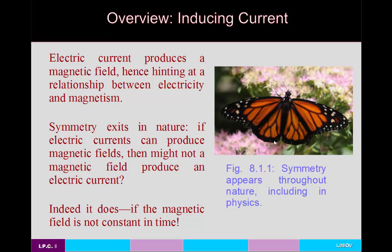This is a sort of symmetry which appears throughout nature. Here you see a butterfly — there's symmetry in the sense that it has two wings that basically mirror each other. Symmetries are a phenomenon which exists throughout nature including in physics. If an electric current can produce a magnetic field, then might not a magnetic field produce an electric current? And the answer is yes, it does.